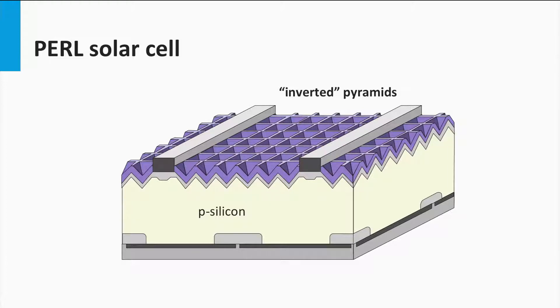Secondly, the inverted pyramid structures are covered by a double layer anti-reflection coating, which results in an extremely low top surface reflection. Often, a double layer coating of magnesium fluoride and zinc sulfide is used as an anti-reflection coating.